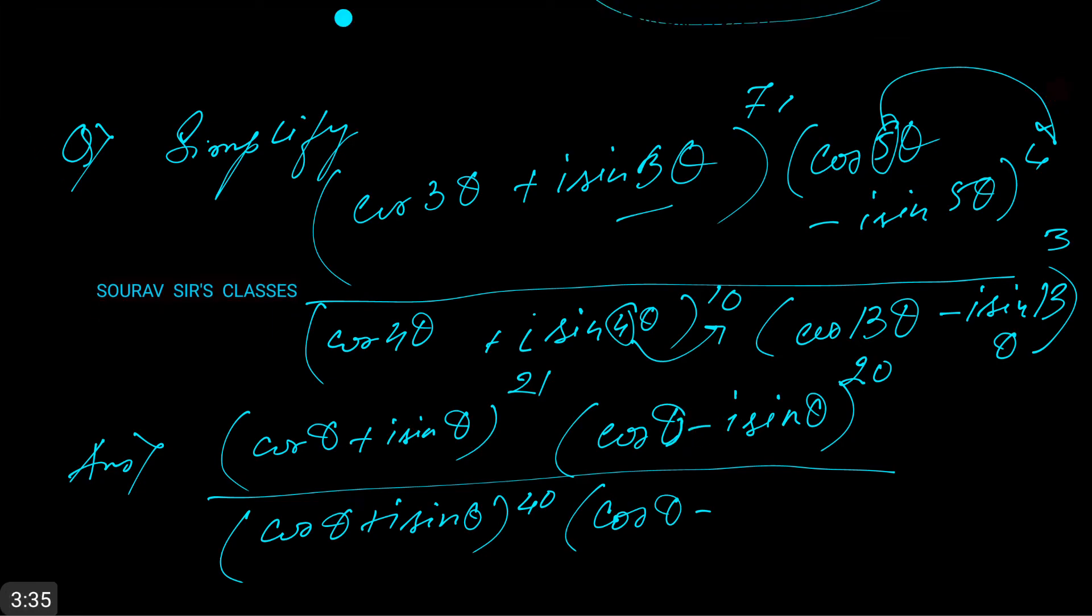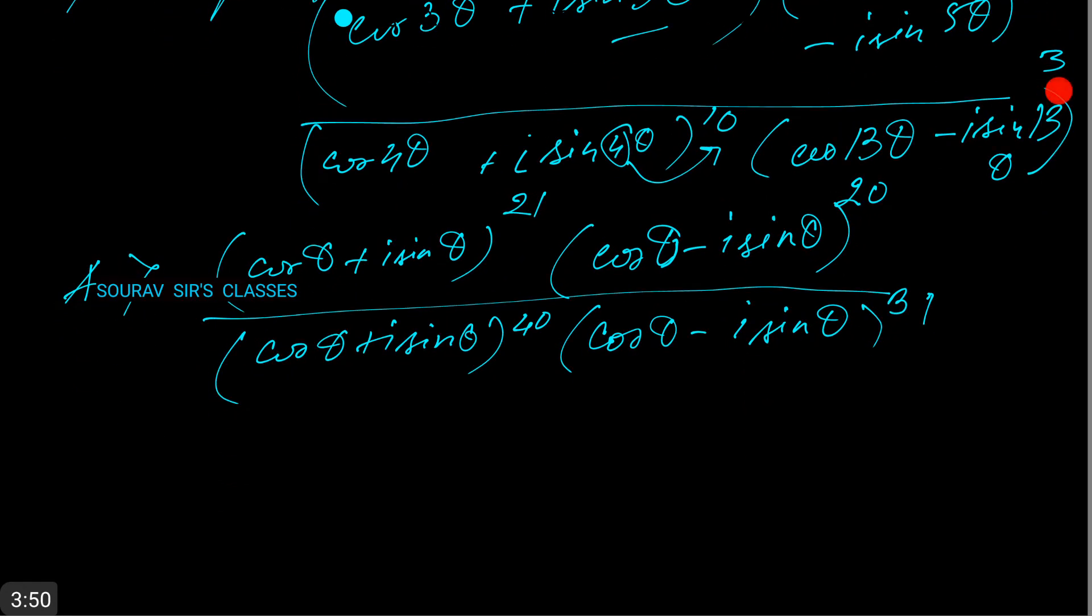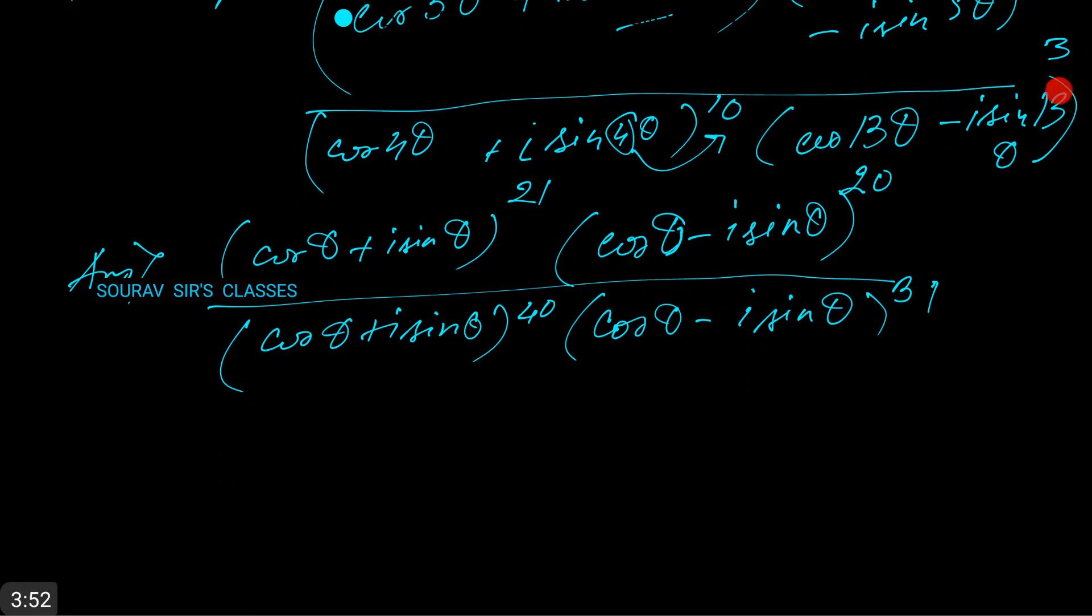We have (cos θ - i sin θ)^39. Now what's left is we have to get these negative signs out to the powers.